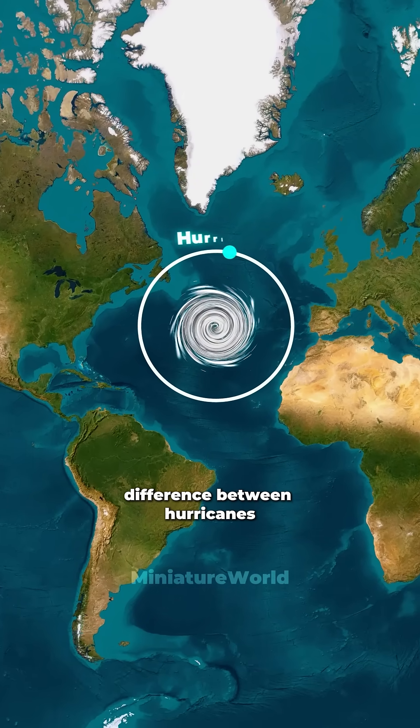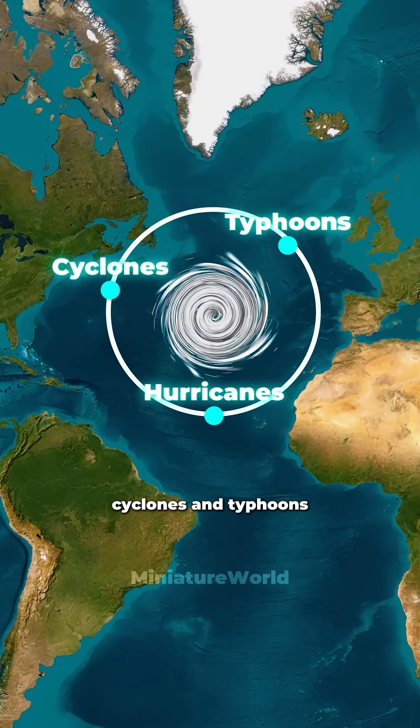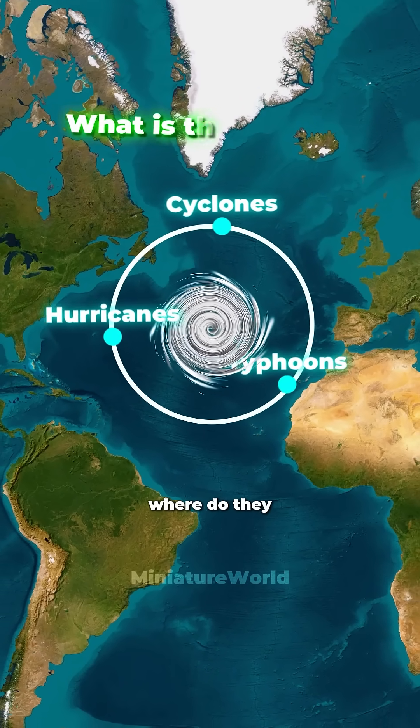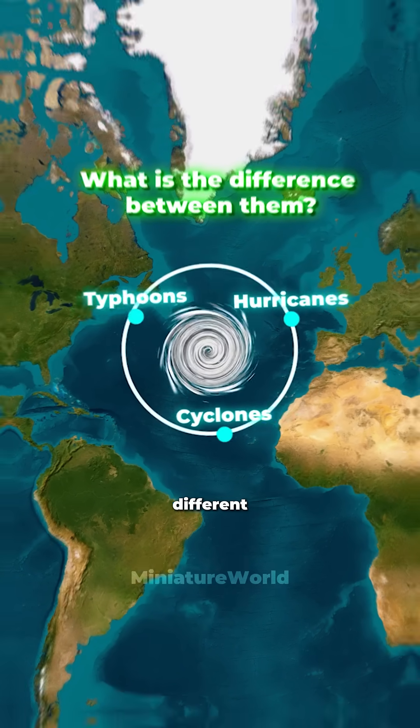What is the difference between hurricanes, cyclones, and typhoons? Where do they come from, and how are they different?